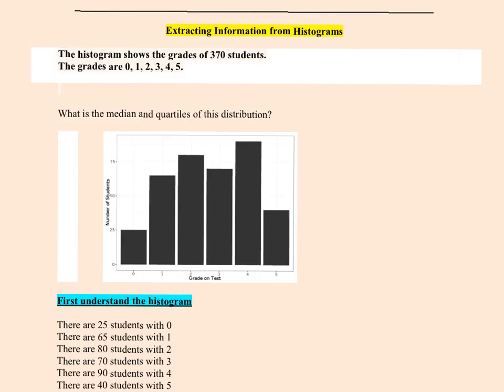If you're given a histogram, first read the question. The question here says these are grades of 370 students, so n = 370. This histogram represents the grades on a certain test for 370 students. The possible values of the grades are 0, 1, 2, 3, 4, or 5.